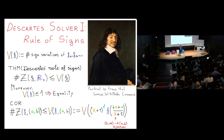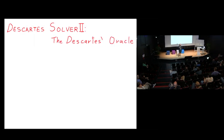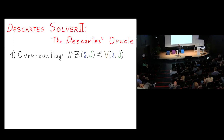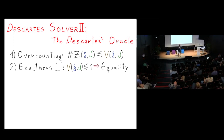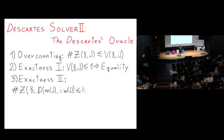Descartes always overcounts roots. If his count is at most one, the count is exact. There is also an exactness property: if the number of complex roots around the interval is at most k, then Descartes will not give a count bigger than k. This can be formalized in the Oberskopf theorem — the CAR gets distracted by complex roots nearby.